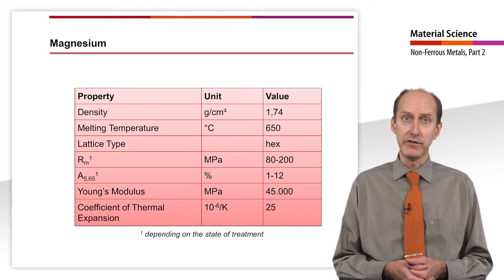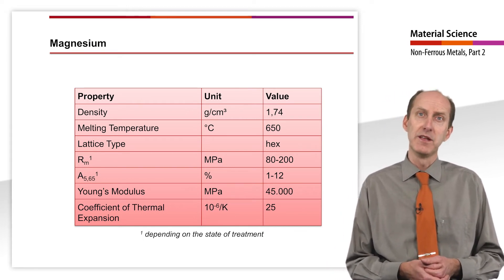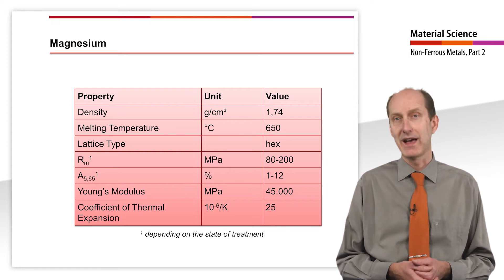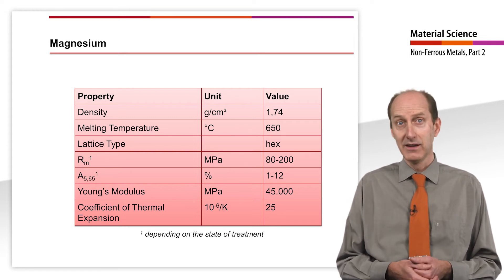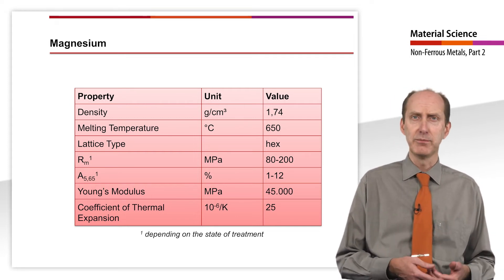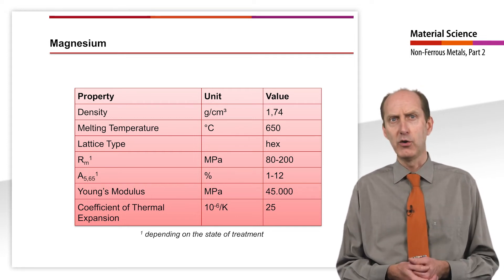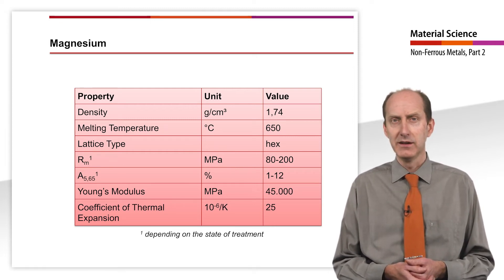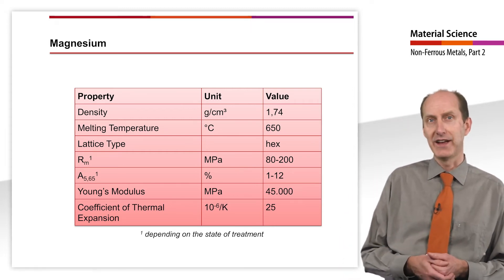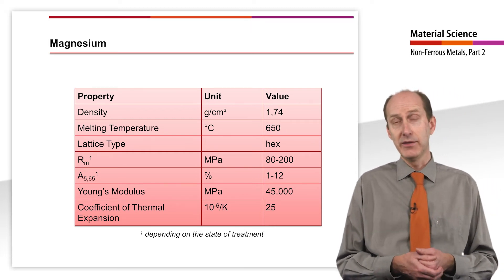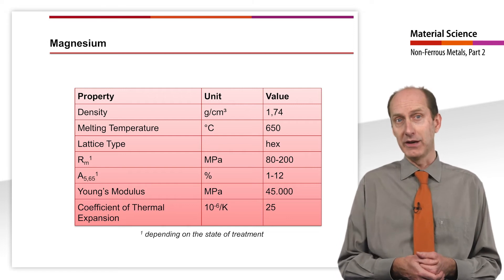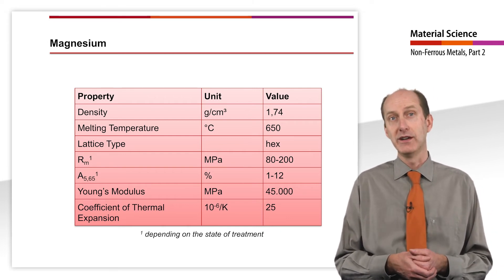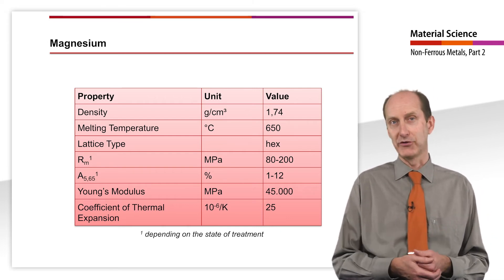But for this very reason, most magnesium alloys are usually formed by casting. They can be cast as sand, permanent mold or die casting. The advantage of thin-walled casting in the case of magnesium alloys should in principle always be exploited in the shaping process.